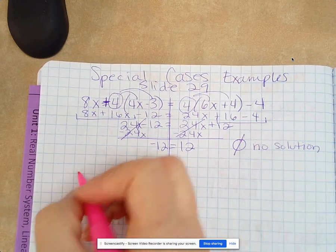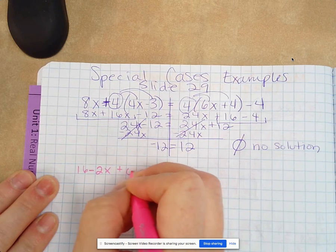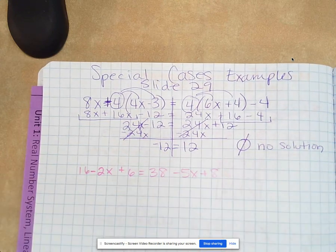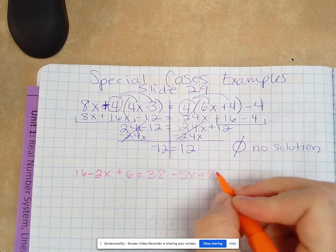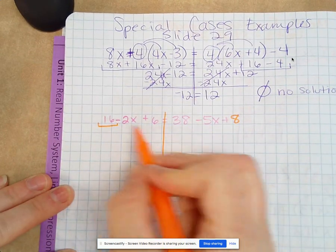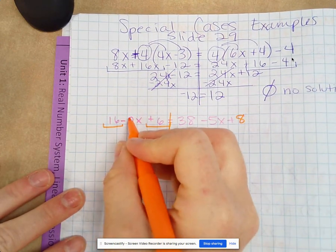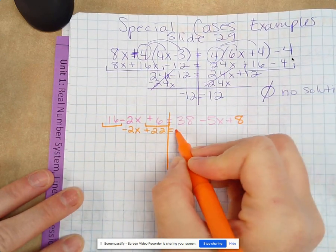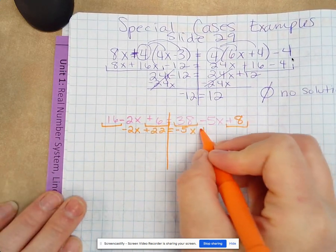Okay, the next one is 16 minus 2x plus 6 equals 38 minus 5x plus 8. So we combine like terms. So 16 plus 6, and we also have this negative 2x, plus 22 equals negative 5x, and then 38 plus 8 plus 46.